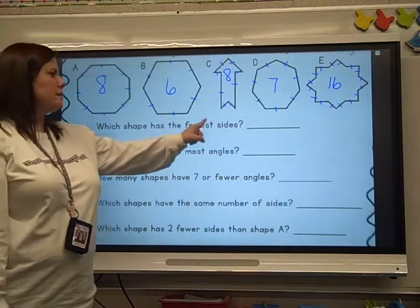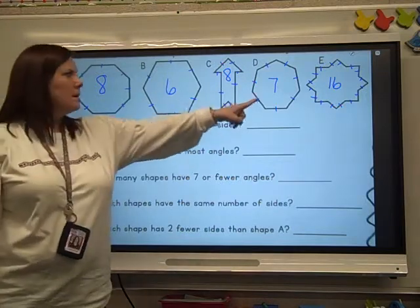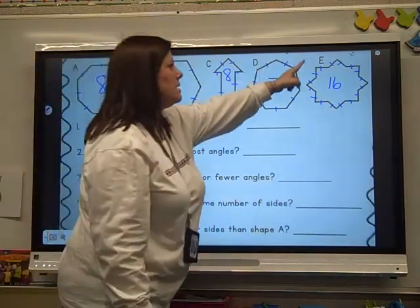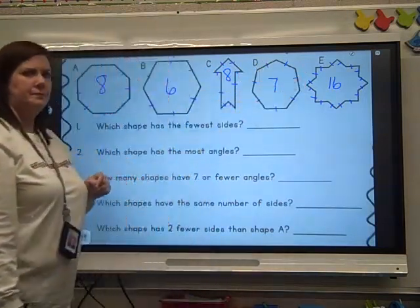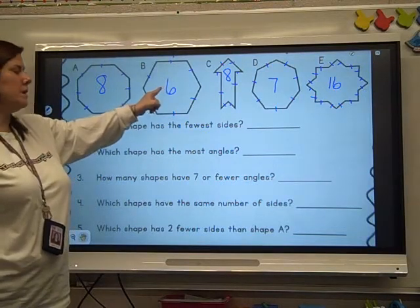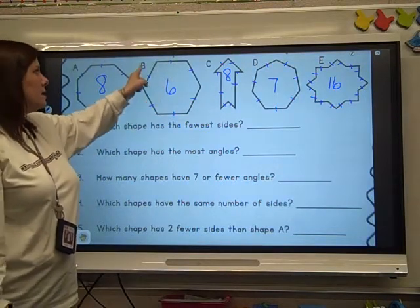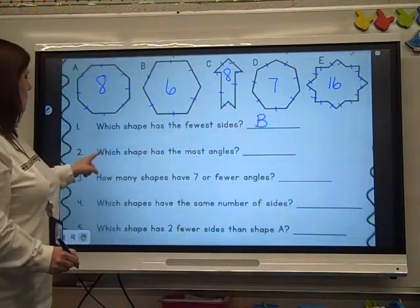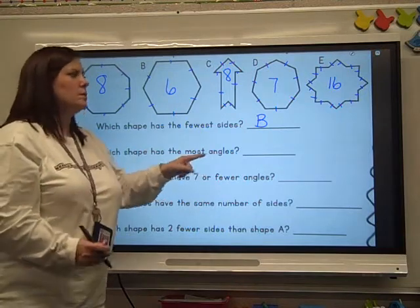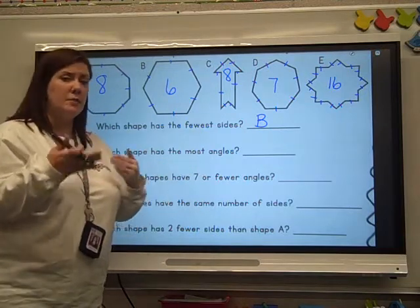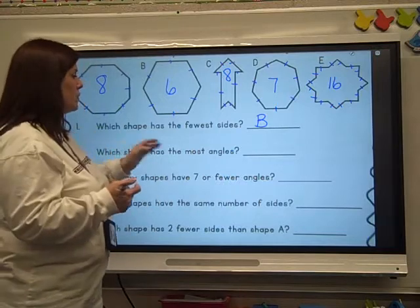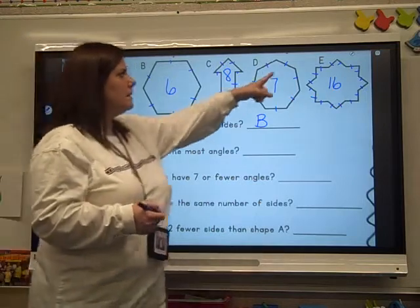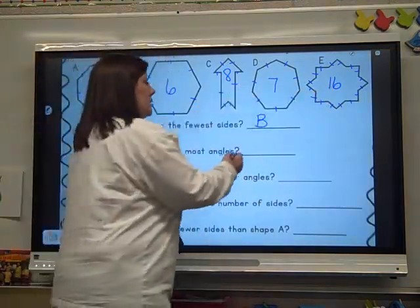Number one — which shape has the fewest sides? Six is the smallest number, so it has the fewest sides. We're going to put B. Number two — which shape has the most angles? The number of sides and the number of angles match, so which one has the most? E — that's the biggest number.